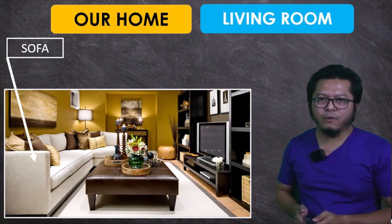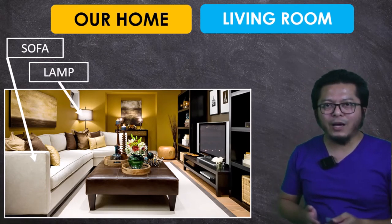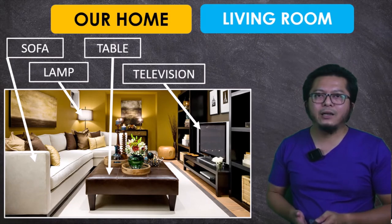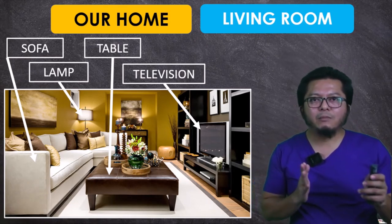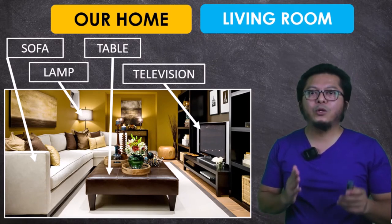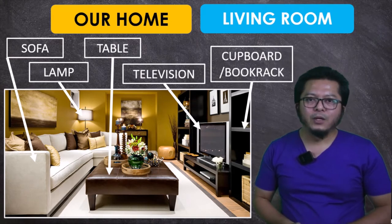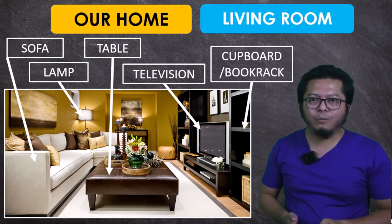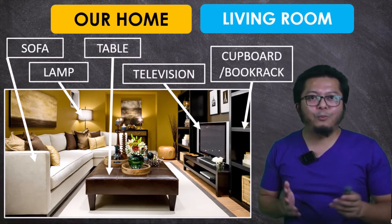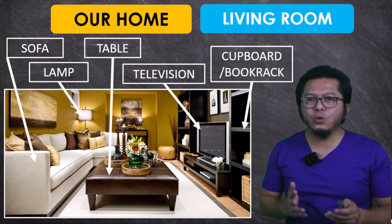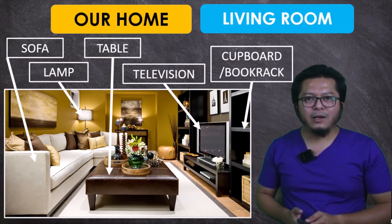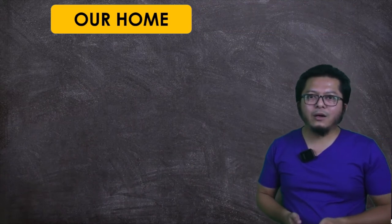The next room is the living room. In the living room we have a sofa, a lamp — sometimes a table lamp — a table, and a television, which is common. Sometimes people have a different room for watching TV, but usually we have a television in our living room. We also usually have a cupboard or book rack in our living room to put books, depending on how big the house is.